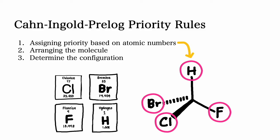Once you identify the four groups, then you need to identify the atomic number of each group.